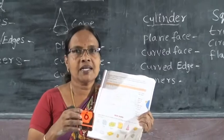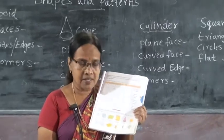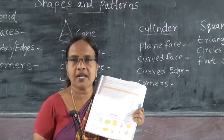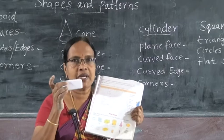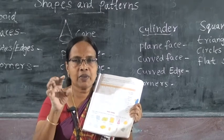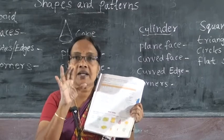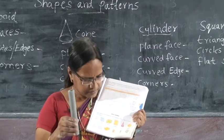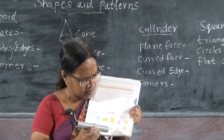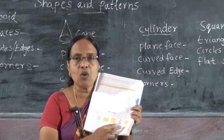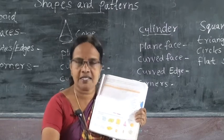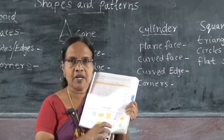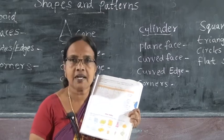We see this dice — it is called a solid object in the shape of a cube. Cylinder. Next, cone. The cone is like an ice cream cone. Next, sphere. A ball is a sphere shape.